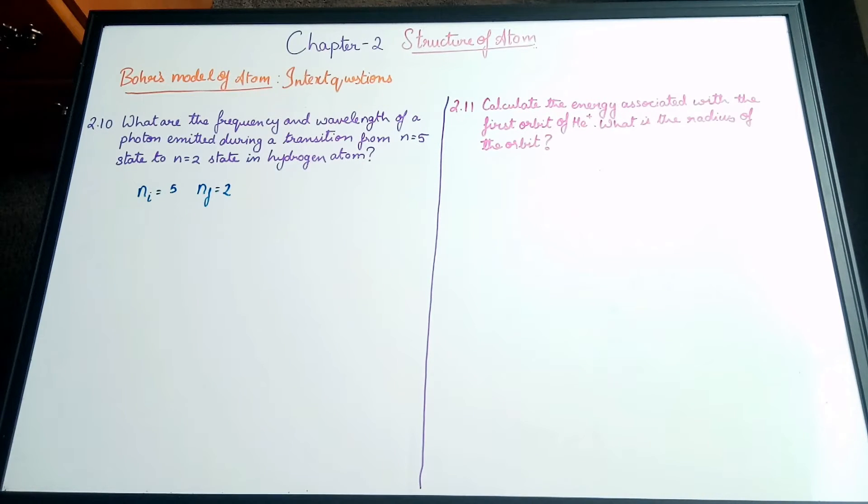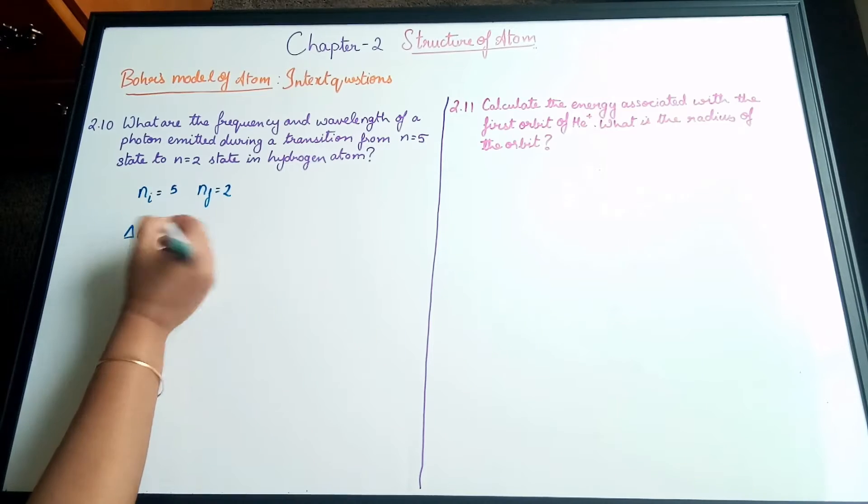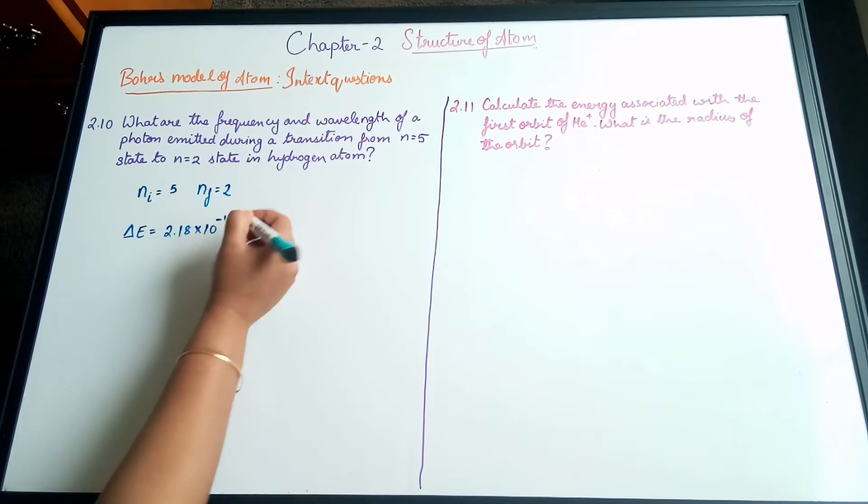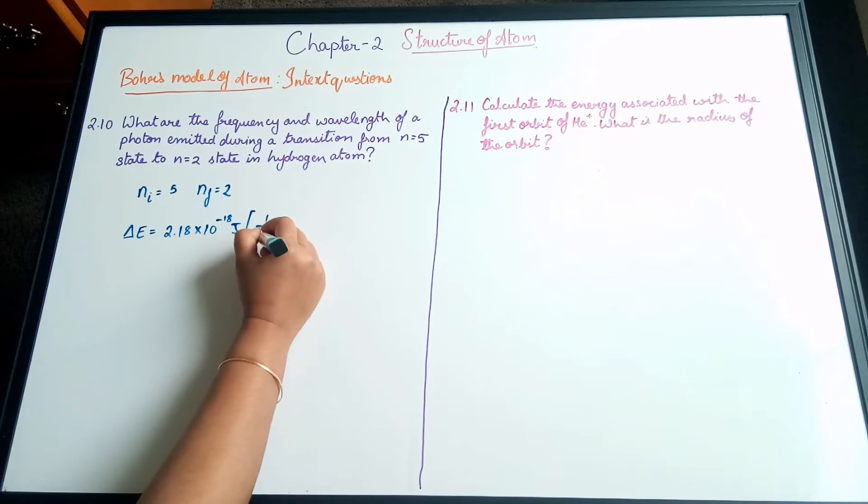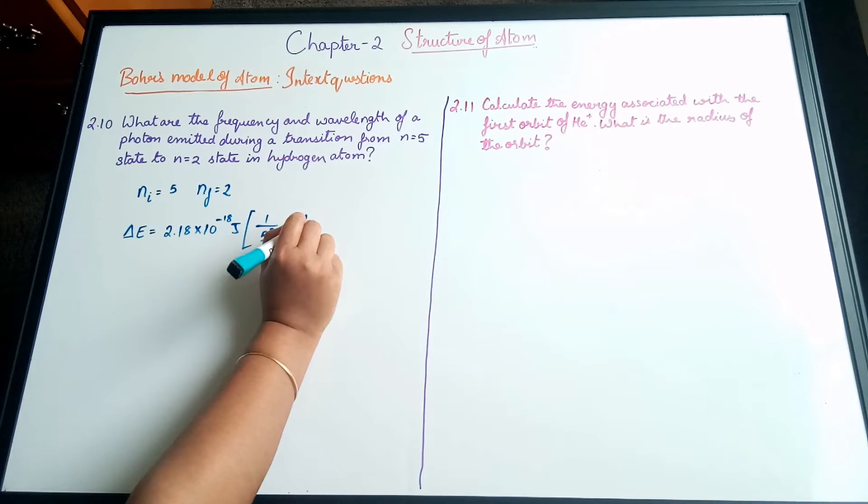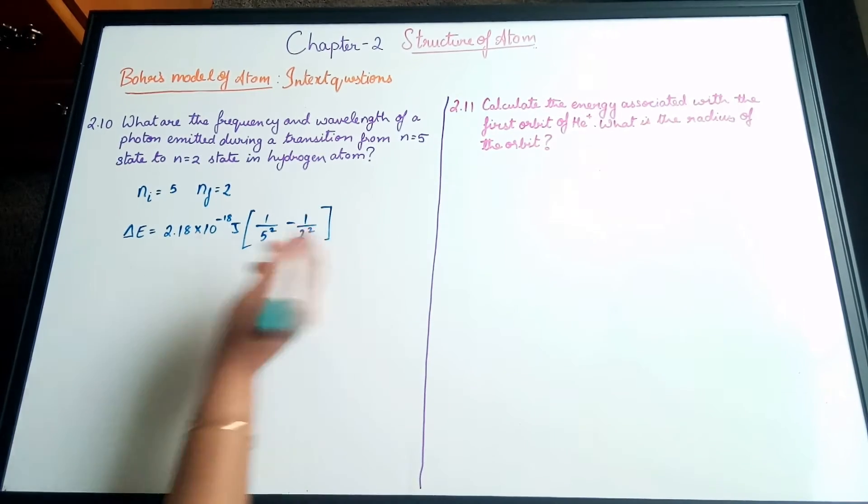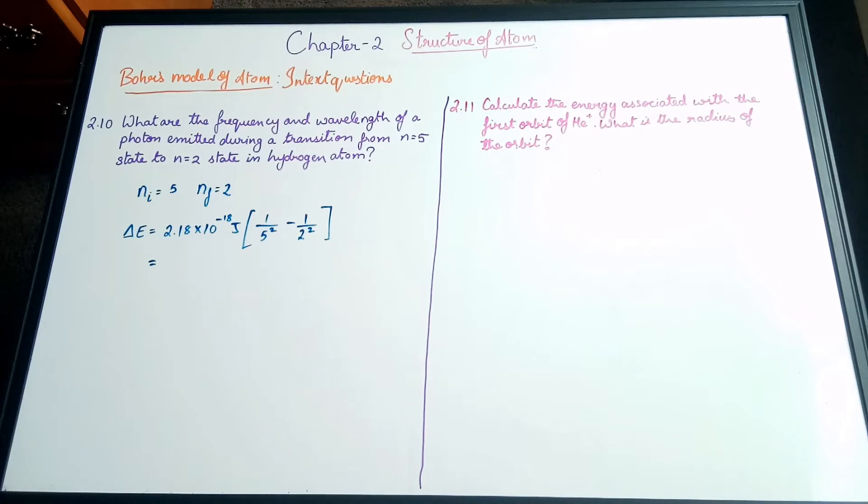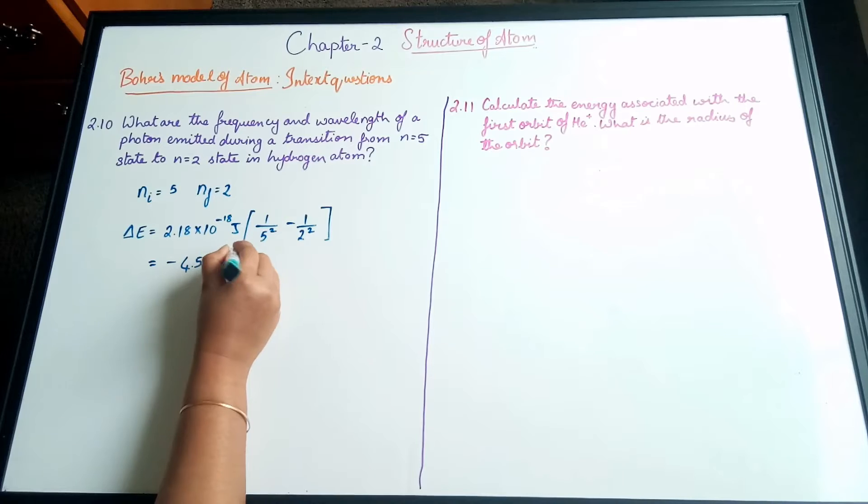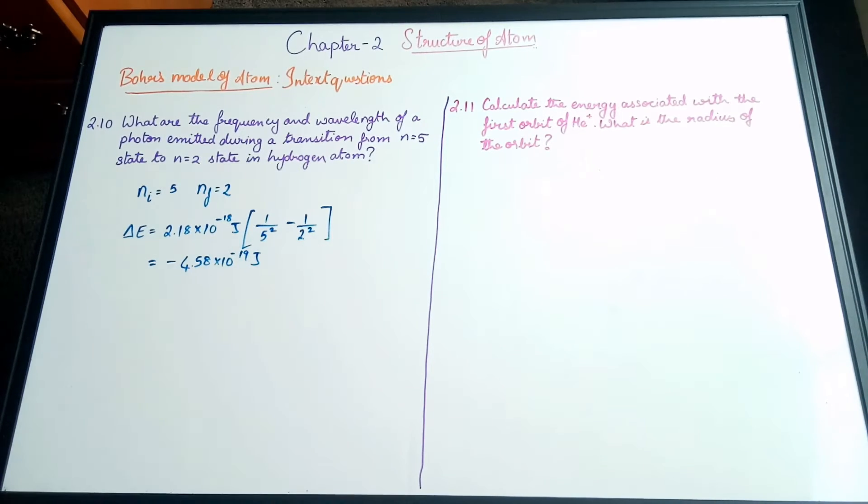We discussed the equation for the energy in the line spectra of hydrogen video. From that equation we know that ΔE = 2.18×10⁻¹⁸ joules × (1/n₁² - 1/n₂²). When this is simplified you get the energy as -4.58×10⁻¹⁹ joules. This is the emission energy. So we calculated the energy of that particular photon.